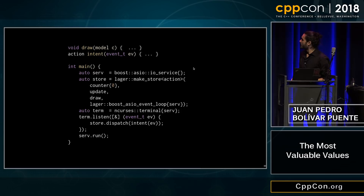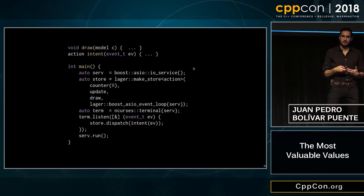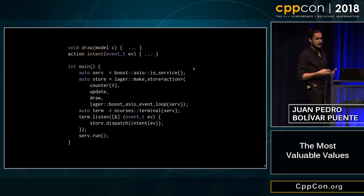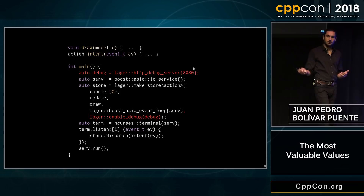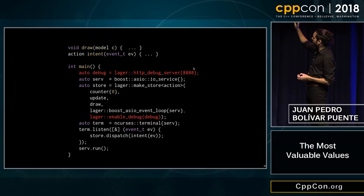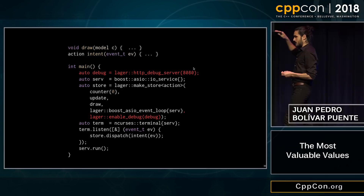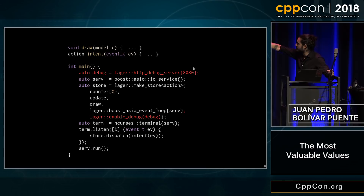One of the big advantages of this architecture is that we can automatically extend our application and implement generic tooling that operates at the data model level. For example, I wrote a debug tool — it's a time-traveling debugger — that allows you to go back to any previous state of your application. We can do this simply by instantiating a debug server, because this debugger is going to be exposed to the outside world through a RESTful API and give me a web browser UI to use it. I just have to say enable_debug with this debug server when building the store, and this is enough to get the time-traveling debugger in my application.